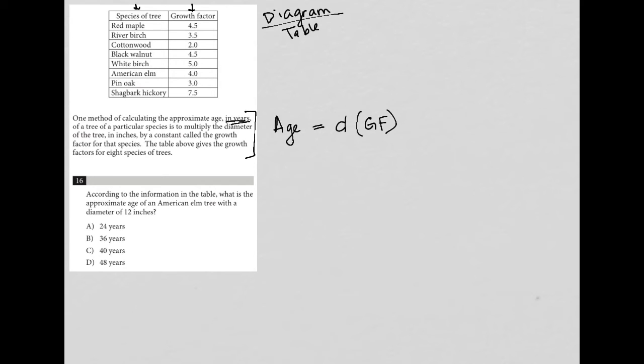Okay, so the table above gives the growth factors for eight species of trees. So question 16 says, according to the information in the table, what is the approximate age of an American elm tree? So American elm is here, which means it has a growth factor of four.